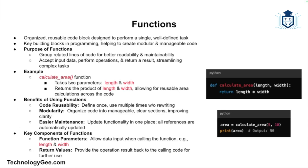A function is a block of organized, reusable code that performs a single well-defined task. Functions are a key building block in programming and help make code modular and easier to manage. They allow us to group related lines of code into a single entity, making code more readable, reusable, and maintainable. In the example on screen, we define a function called calculate_area with two parameters — length and width — and it returns the product of the two values.